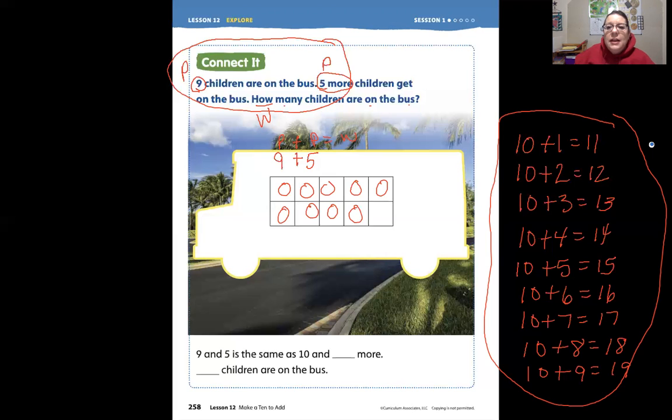So if we have 9 and then we add 5 more: 1, 2, 3, 4, 5. How many did we take from that group of 5? We had 1, 2, 3, 4, 5 right here. Let's count on from 9 up to 10. Ready? 9, 10. How many is that? 1. So we borrow 1 of those counters from the 5, right, to make a group of 10, and then we add 4 more ones.